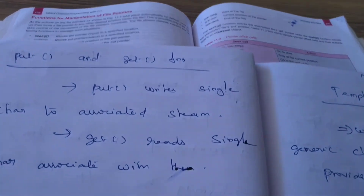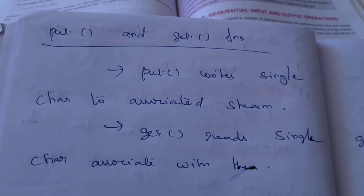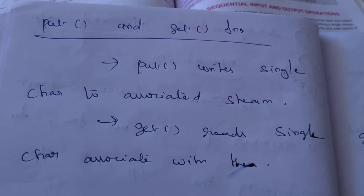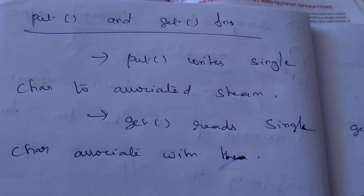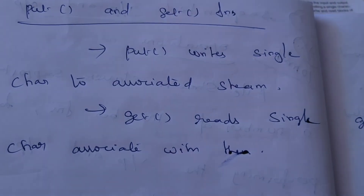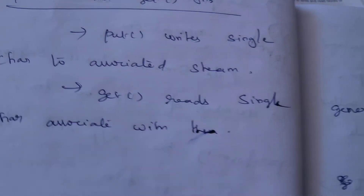Now we will look at Program 5.4. The put method writes a single character to the associated file stream, and the get method reads a single character from the associated file stream.